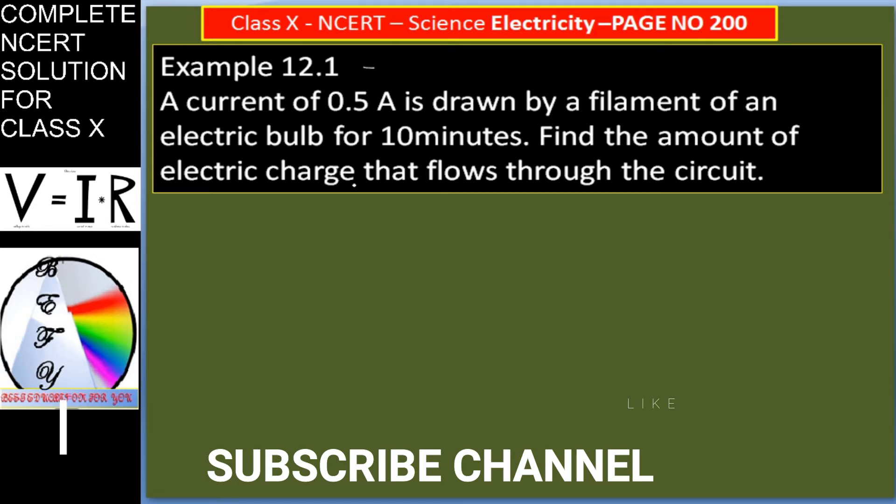As you are seeing here, a current of 0.5 ampere is drawn by a filament. Given: current is 0.5 ampere of an electric bulb for 10 minutes. Time is given as 10 minutes.